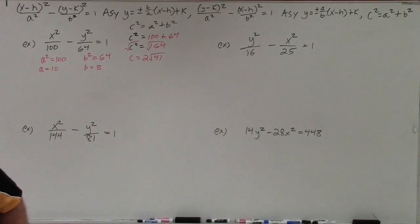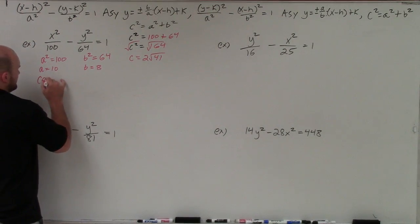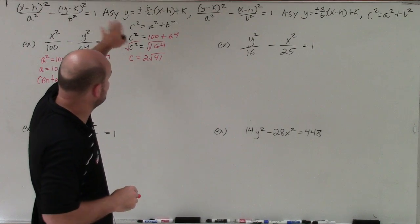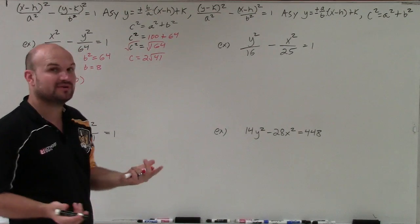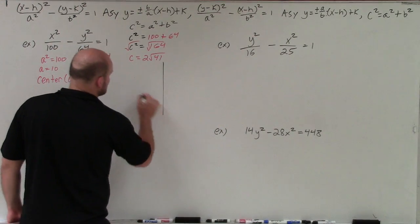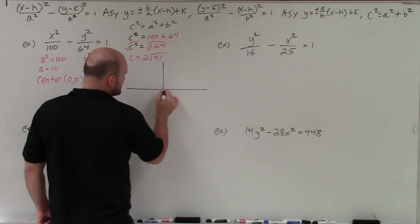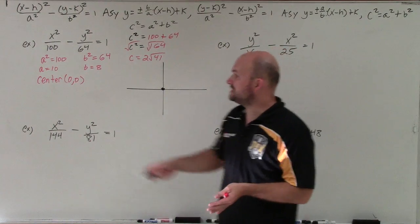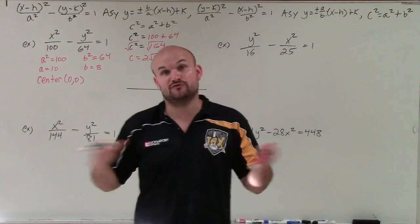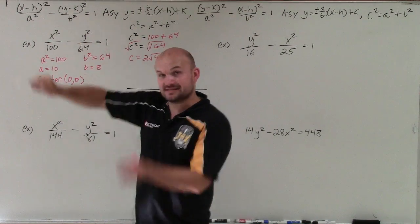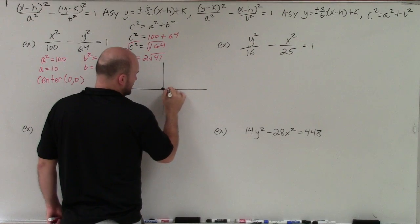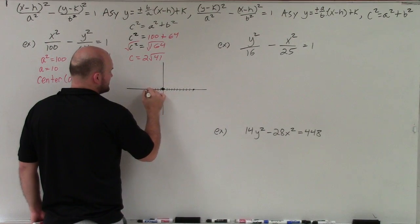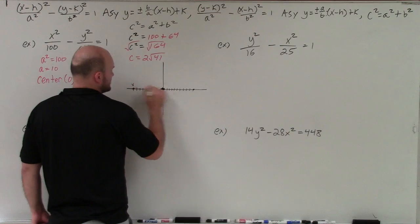Now let's plot the information on an x and y-axis. The center is at the origin. Since a squared is under the x term, we're going horizontal — so the vertices are 10 units left and right of center. I'll plot the vertex at positive 10 and the vertex at negative 10 on the x-axis.